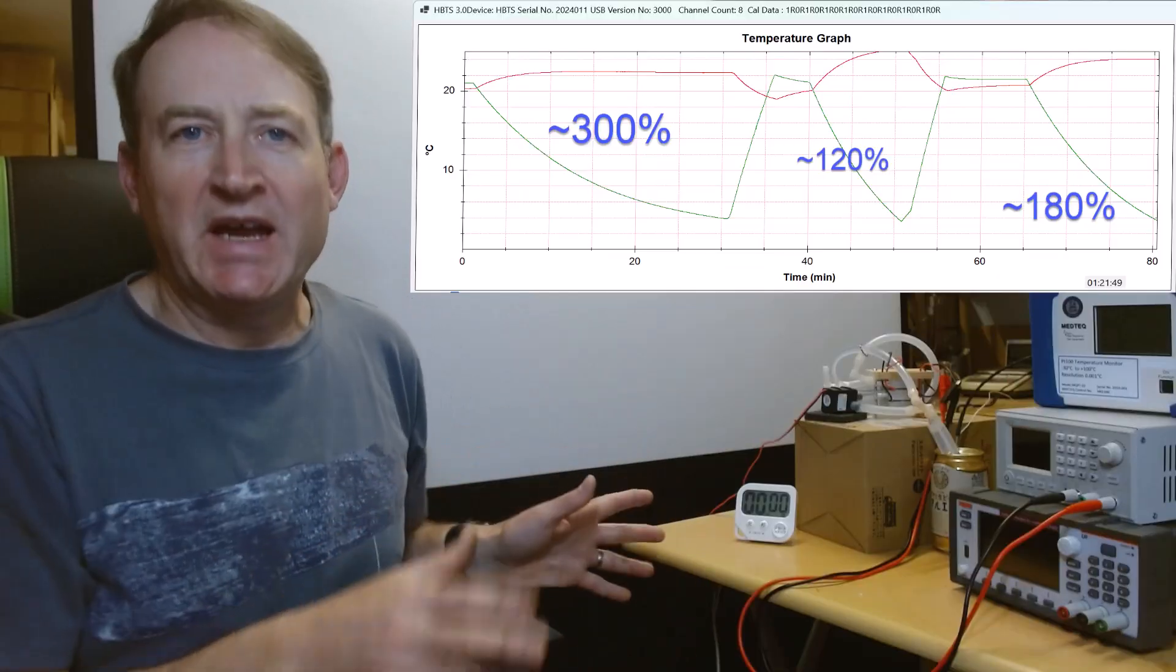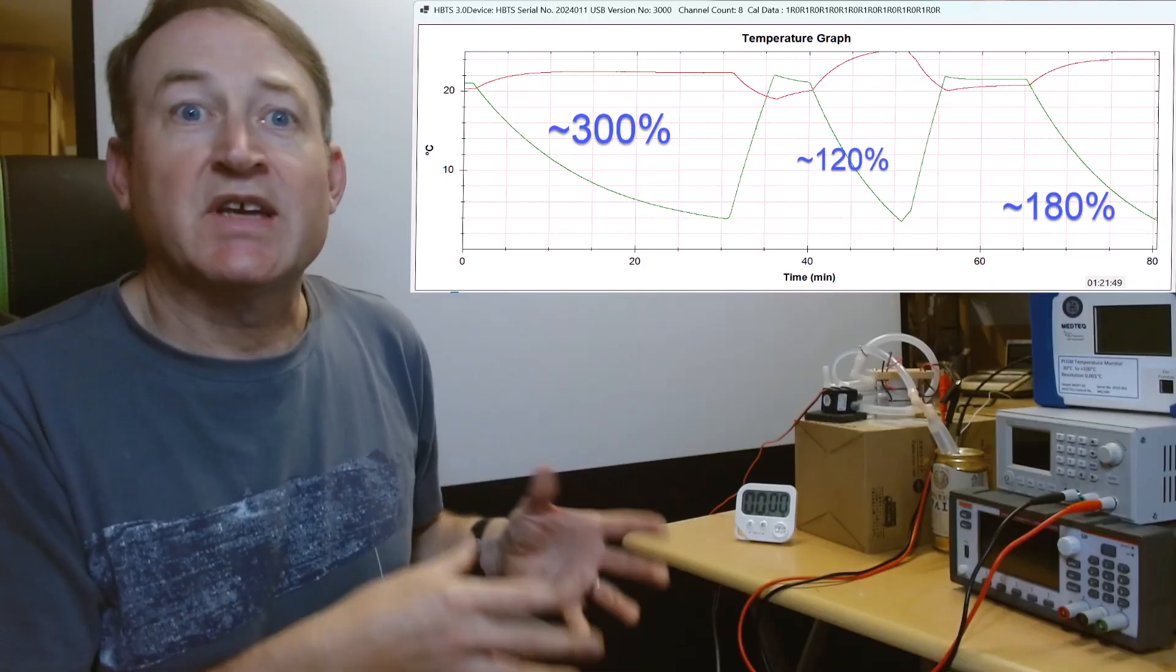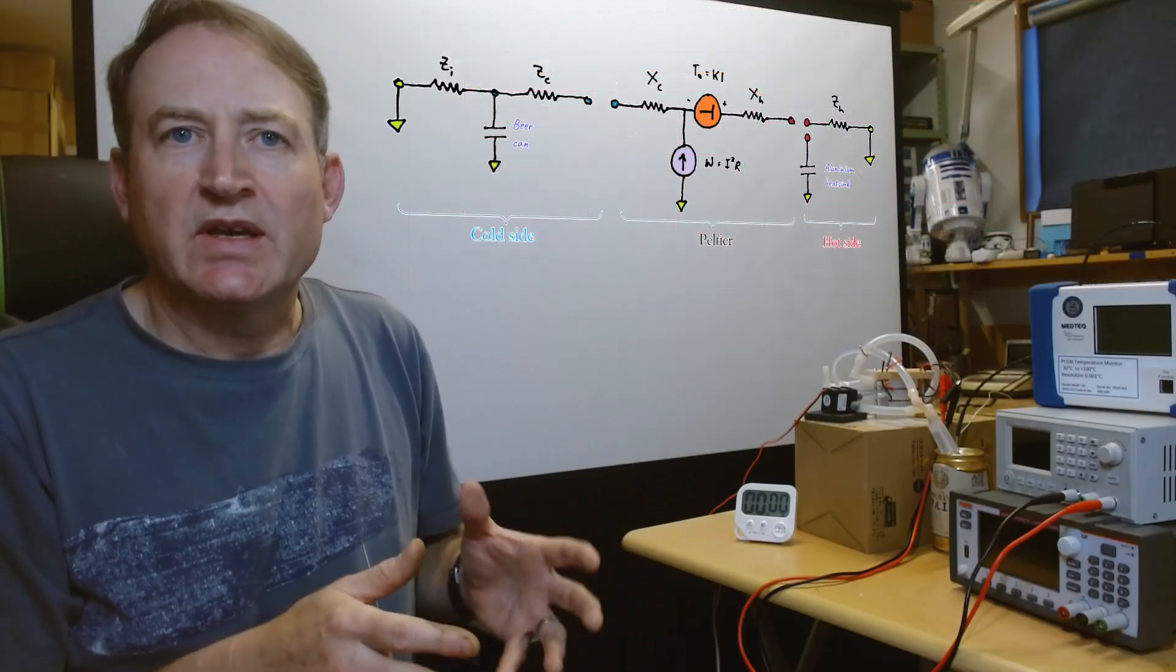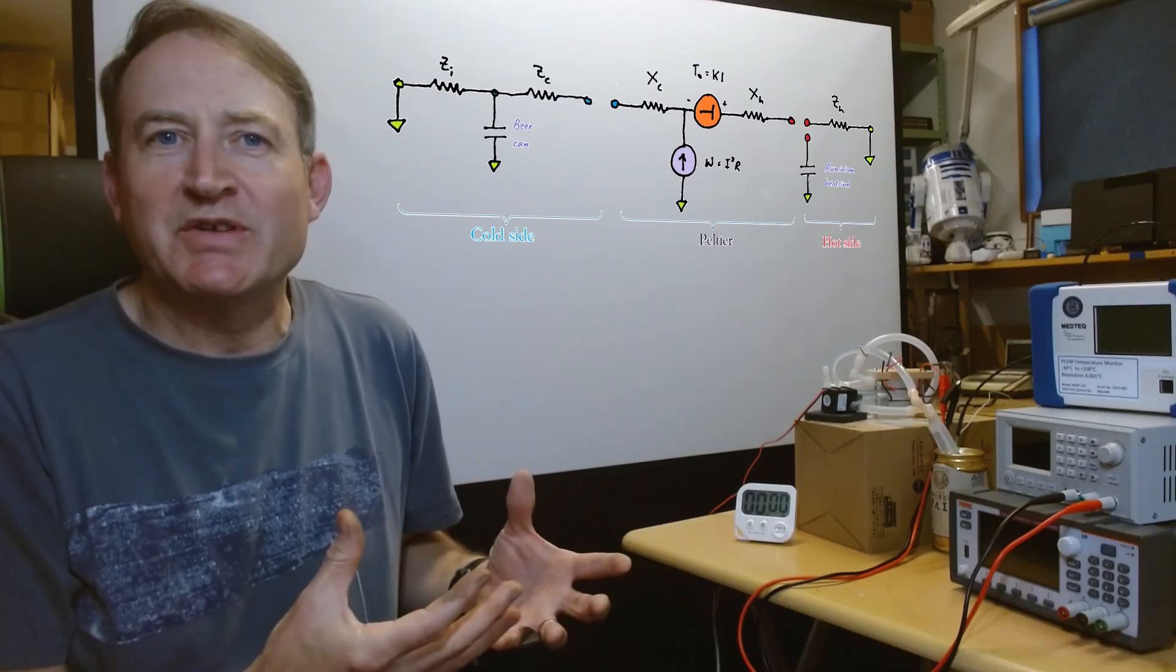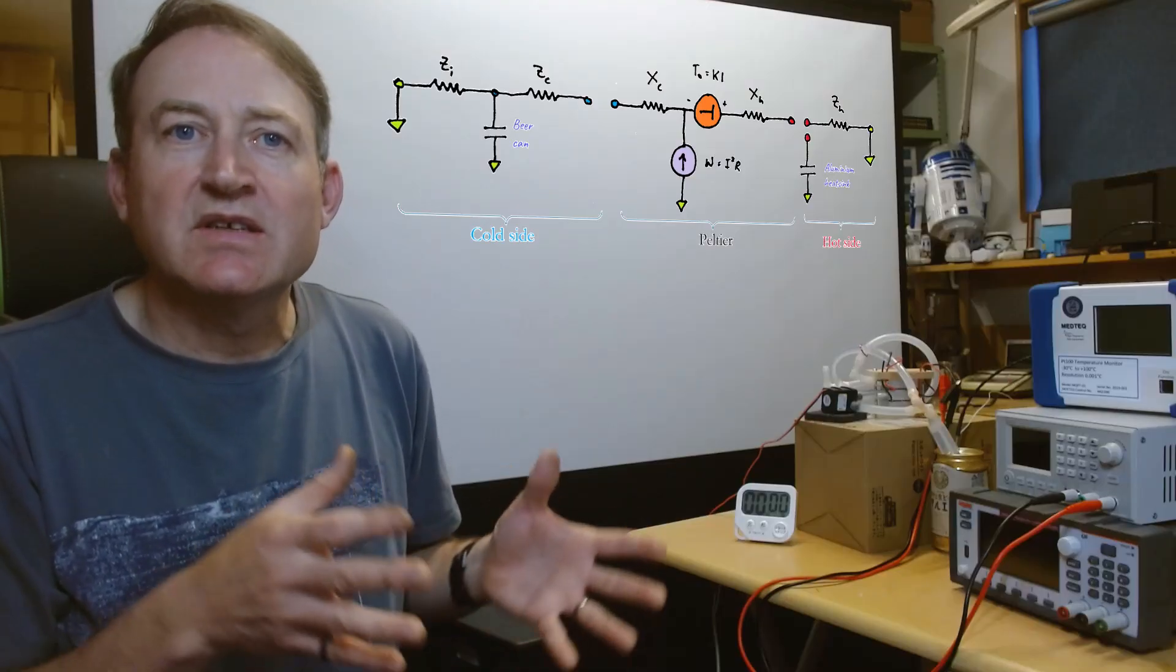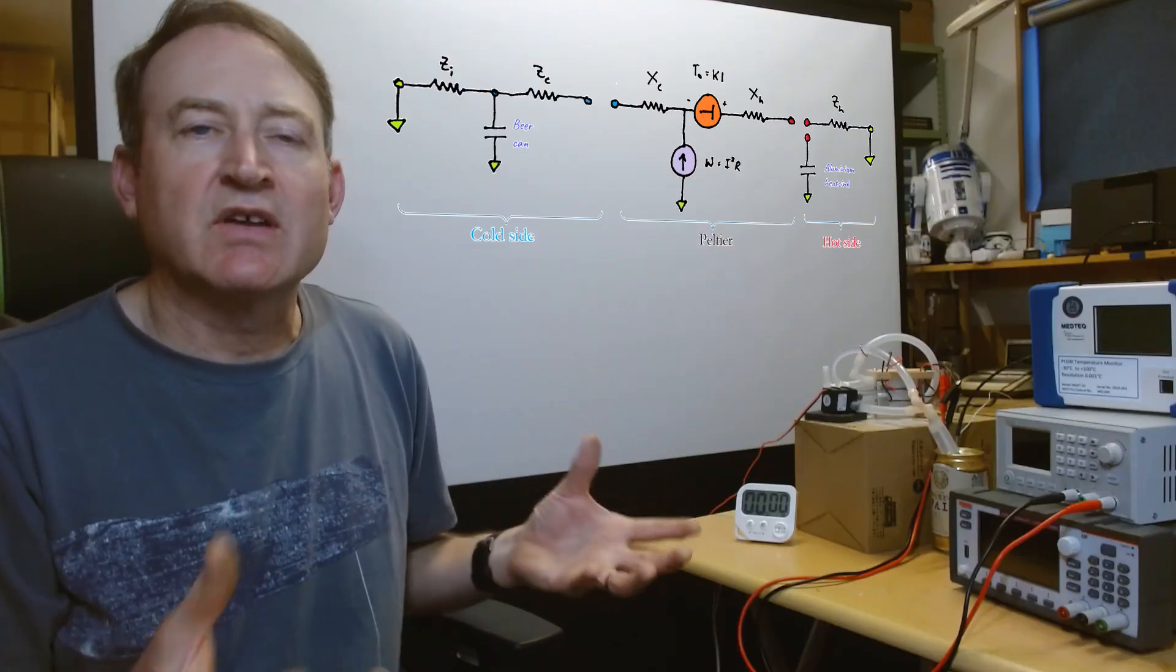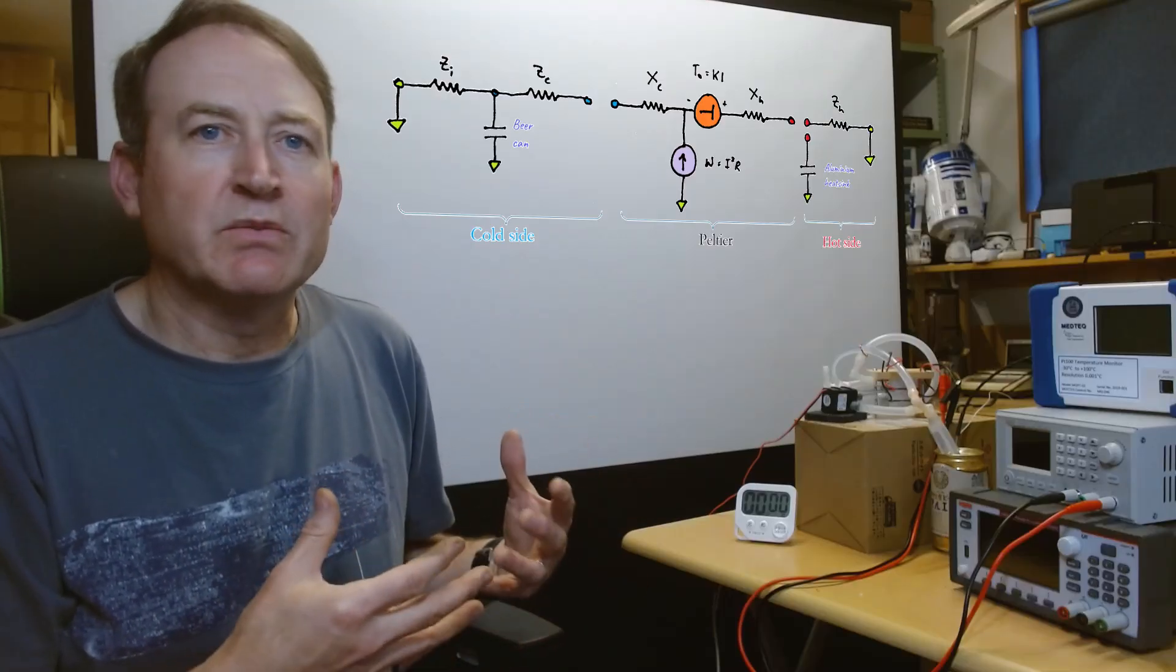And that's really the main message I want to get from this video, is that Peltiers can be a lot more efficient than that three to 10%. You might ask why, and it all has to do with that design of the thermal circuit on the outside of the Peltier. The Peltier itself has limitations, but as long as you design the outside circuit, the thermal circuit outside of that well, you're going to get reasonable efficiency from the whole system.